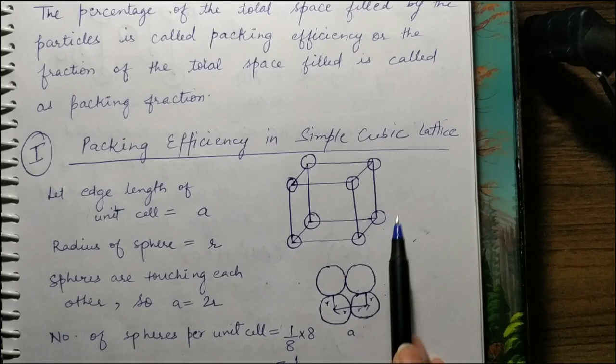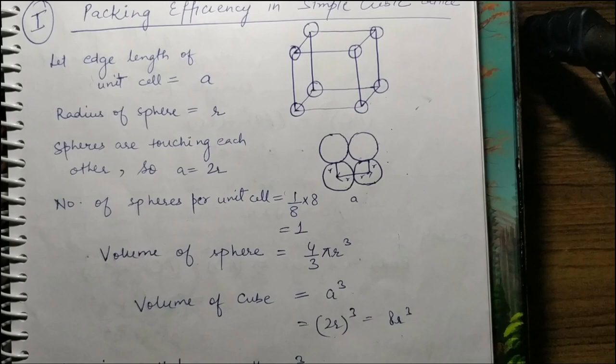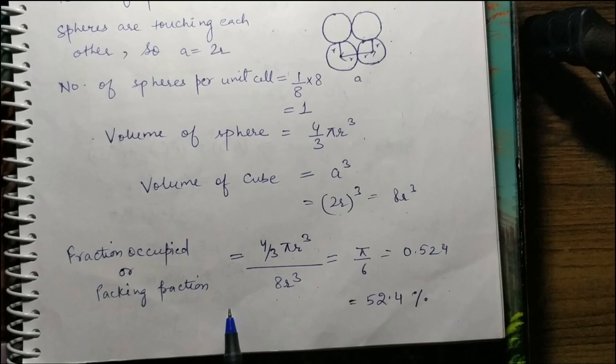We use the structure where atoms are touching each other. What we did was: number of spheres per unit cell, volume of spheres, and volume of cube. When you divide them, you get the packing fraction. If you divide volume of spheres by volume of cube, you get the packing fraction. In simple cubic lattice, it will be 52.4%.